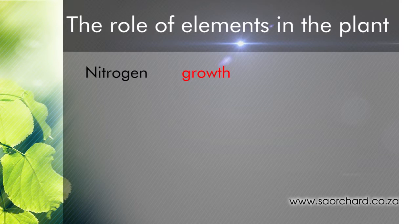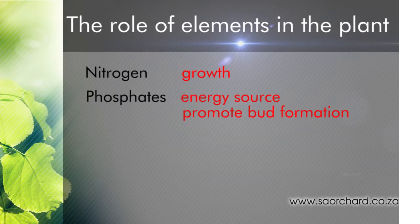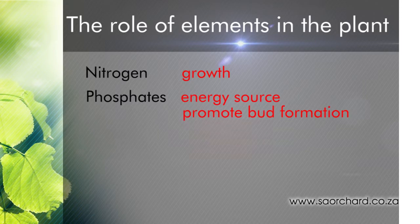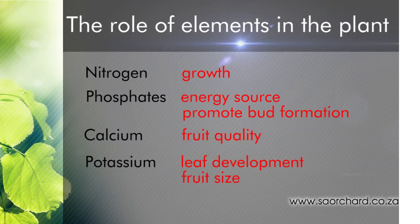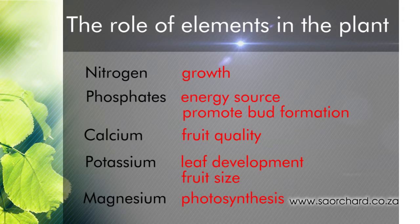Nitrogen promotes growth. Phosphates are an energy source and promote bud formation. Calcium promotes fruit quality. Potassium is important for leaf development and fruit size, while magnesium plays an important part in photosynthesis. Each element has an important role to play and should be applied at the right time of year to benefit specific stages of development in the plant.